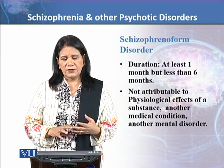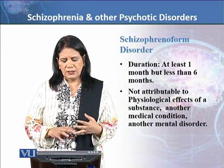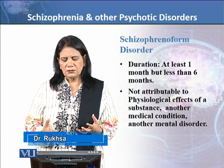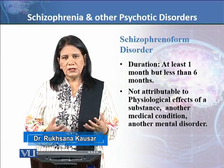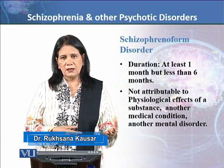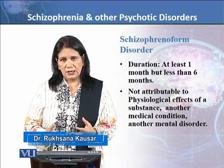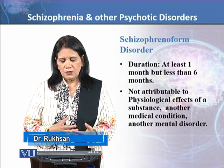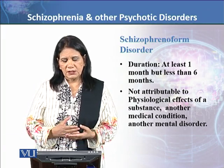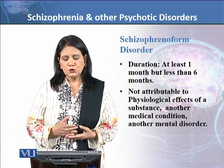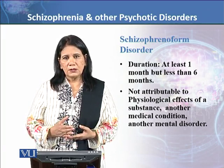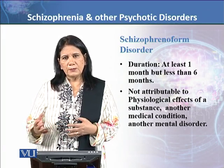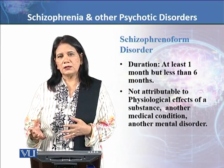The main difference is duration. If the duration is less than 6 months and the patient reports positive and negative symptoms, you will not give a schizophrenia diagnosis. Instead, you will diagnose schizophreniform disorder. In schizophrenia, the duration must be 6 months or more, whereas schizophreniform disorder applies when symptoms last 1 to 6 months.